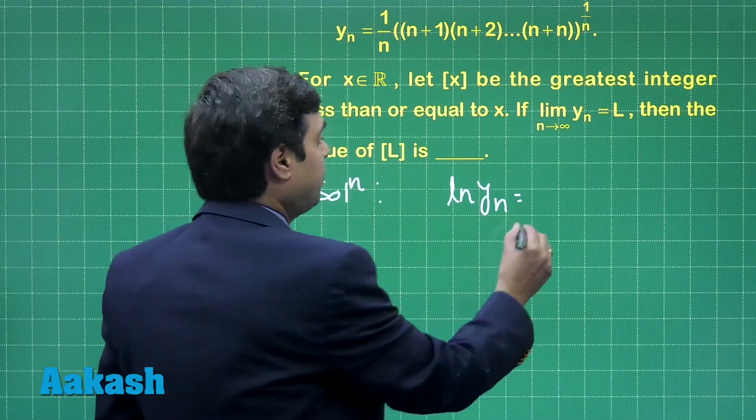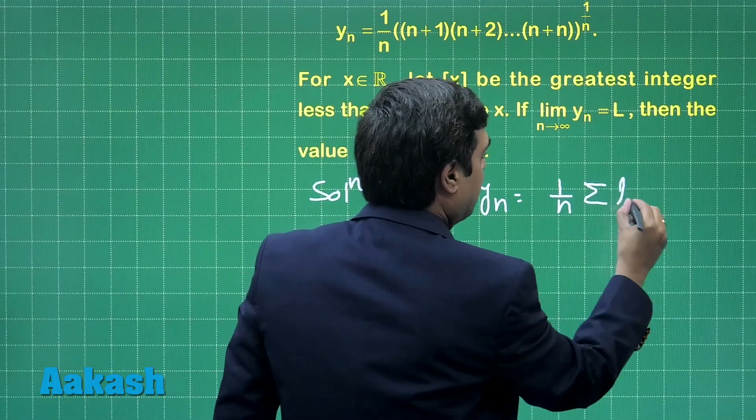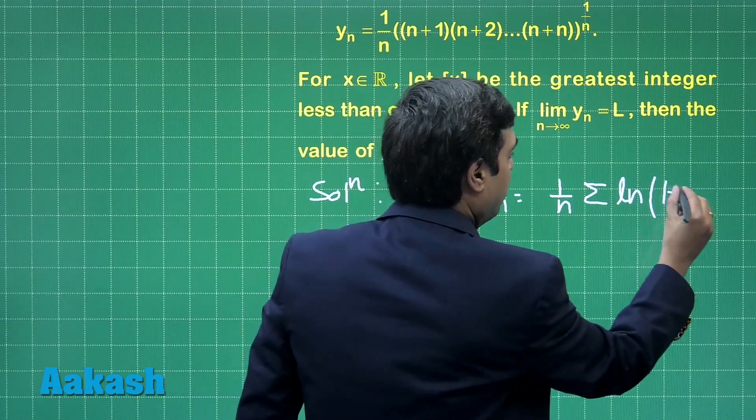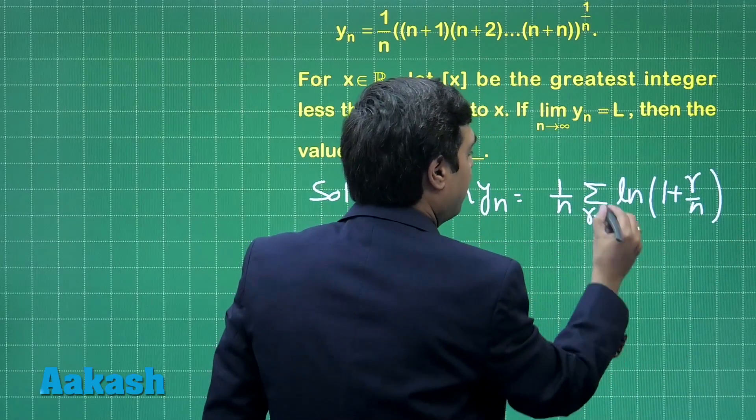When you take log, you simply get 1 by n summation log 1 plus r by n, where r is from 1 to n.